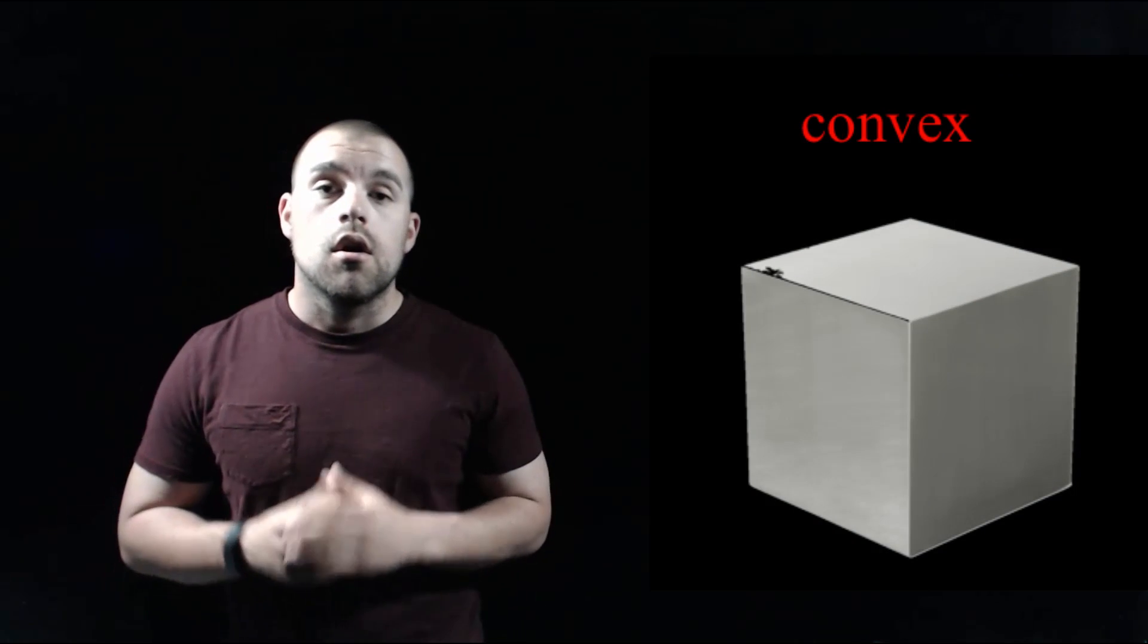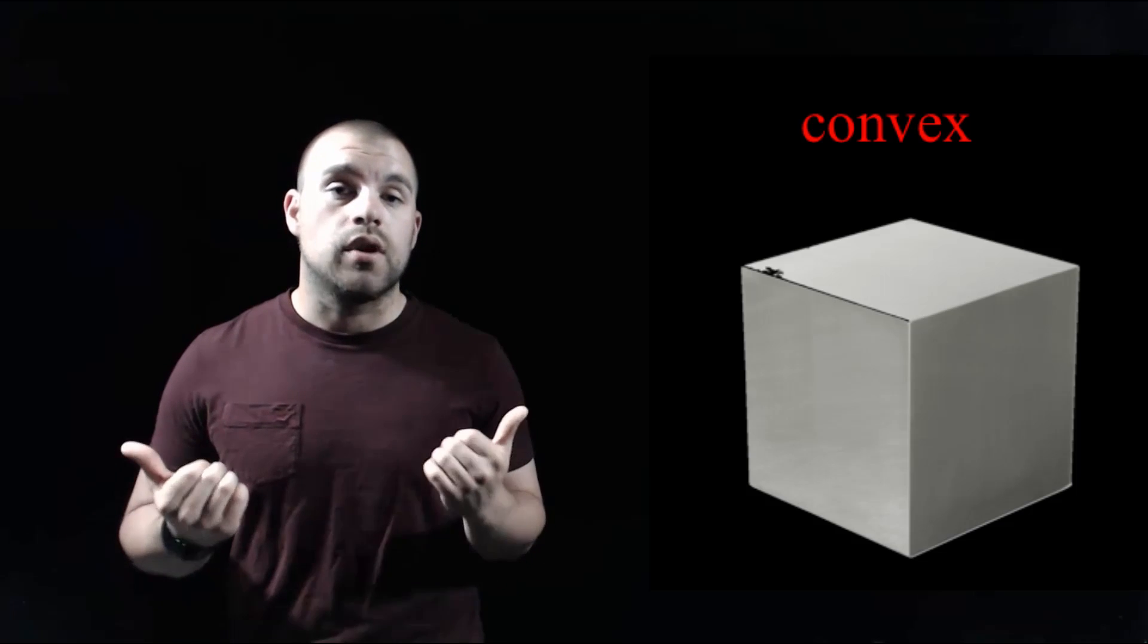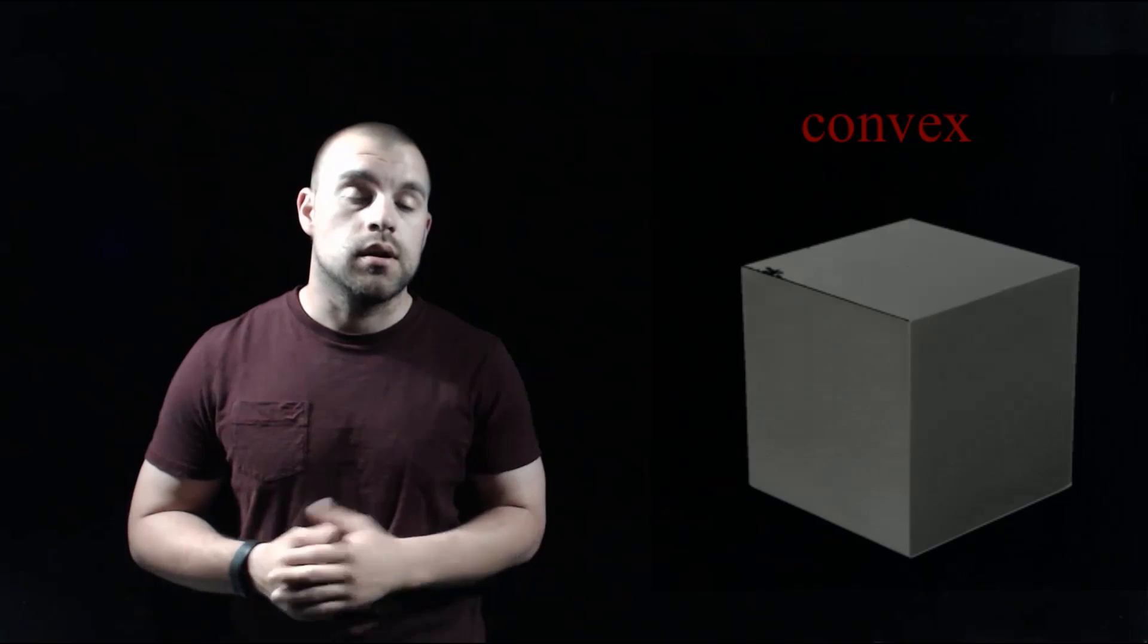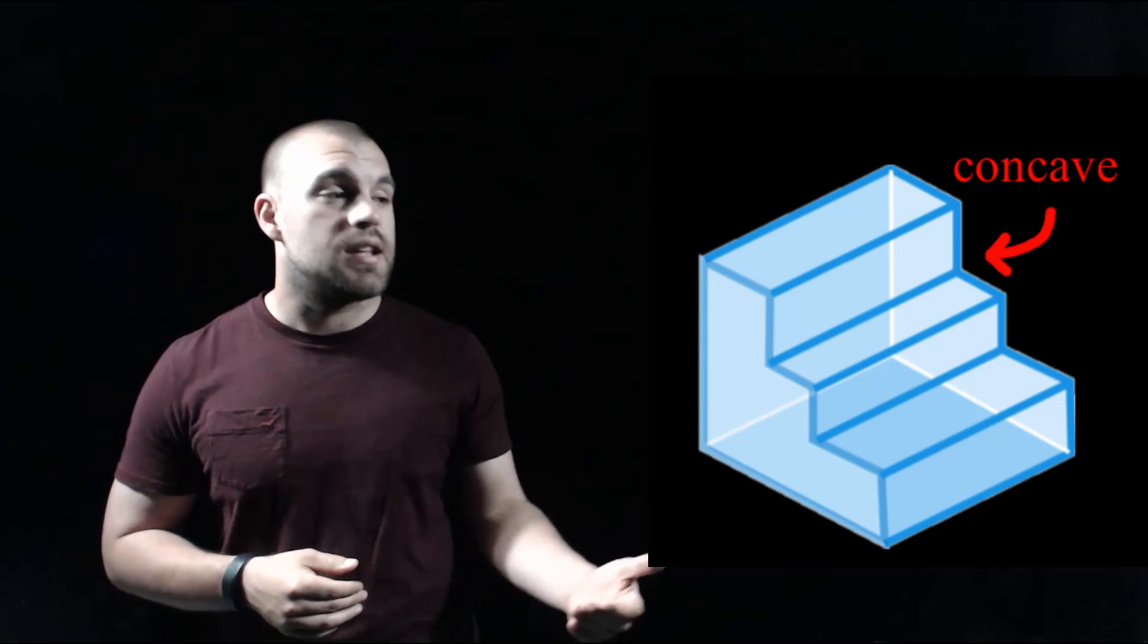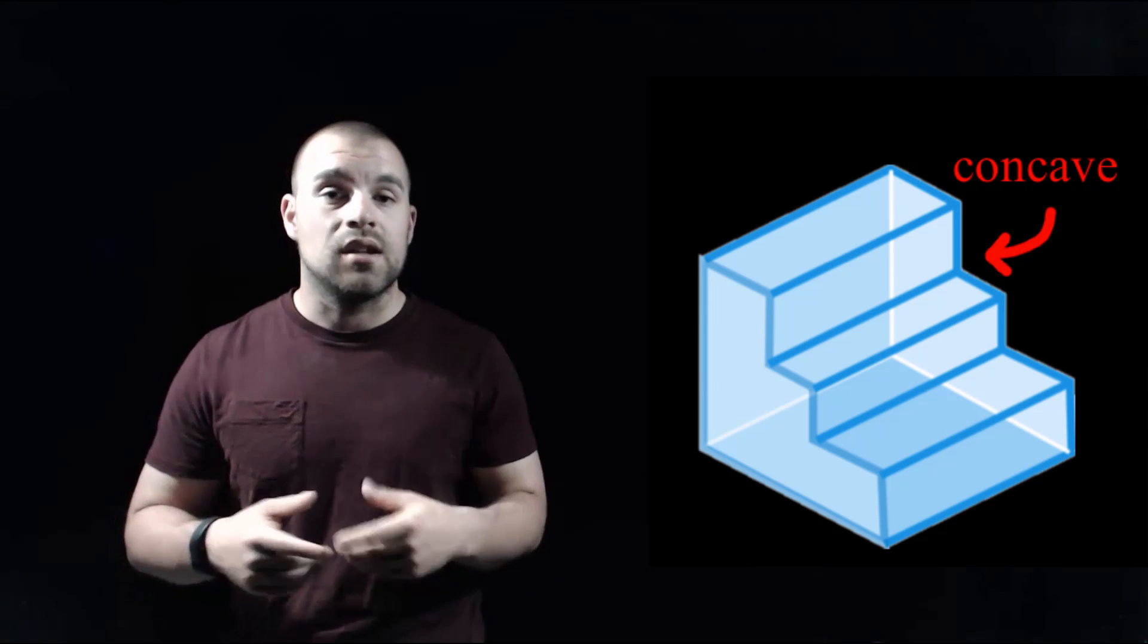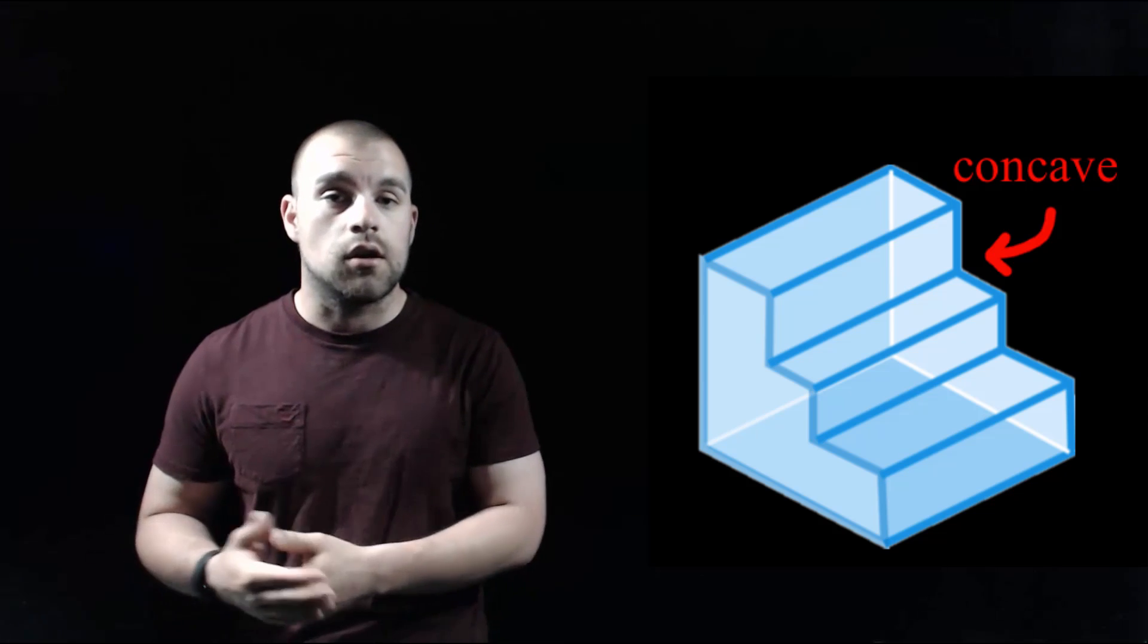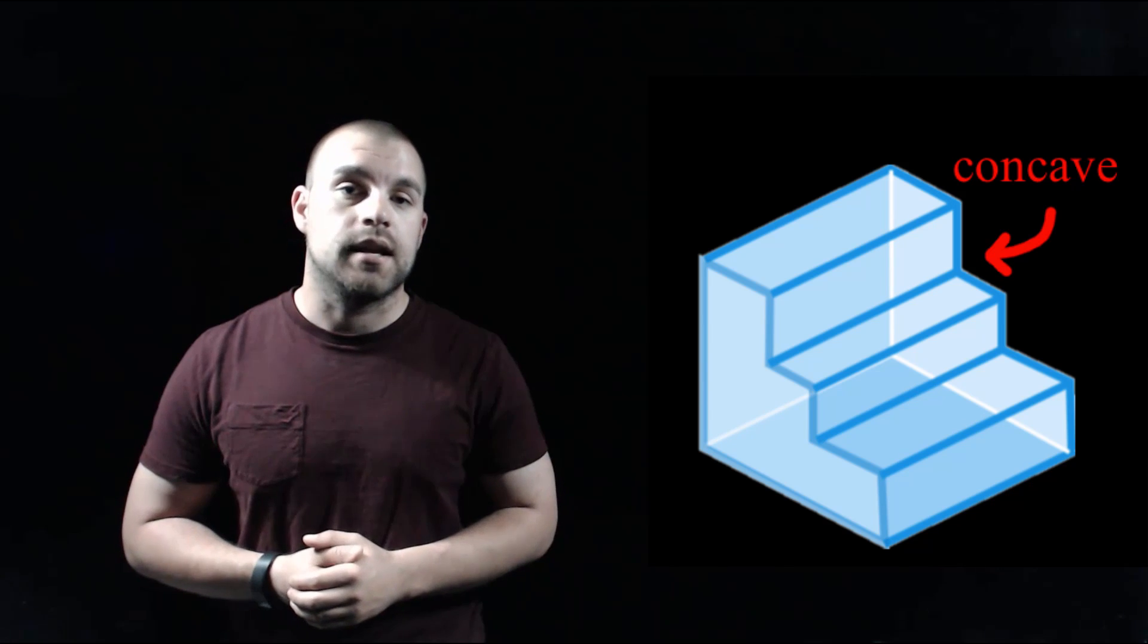If we take a look at this cube, all of the vertices are pointing out away from the middle of the shape so that is a convex polyhedron. But if we look at this stair-step shape, there are some vertices that point in towards the middle of our figure so that is a concave polyhedron.